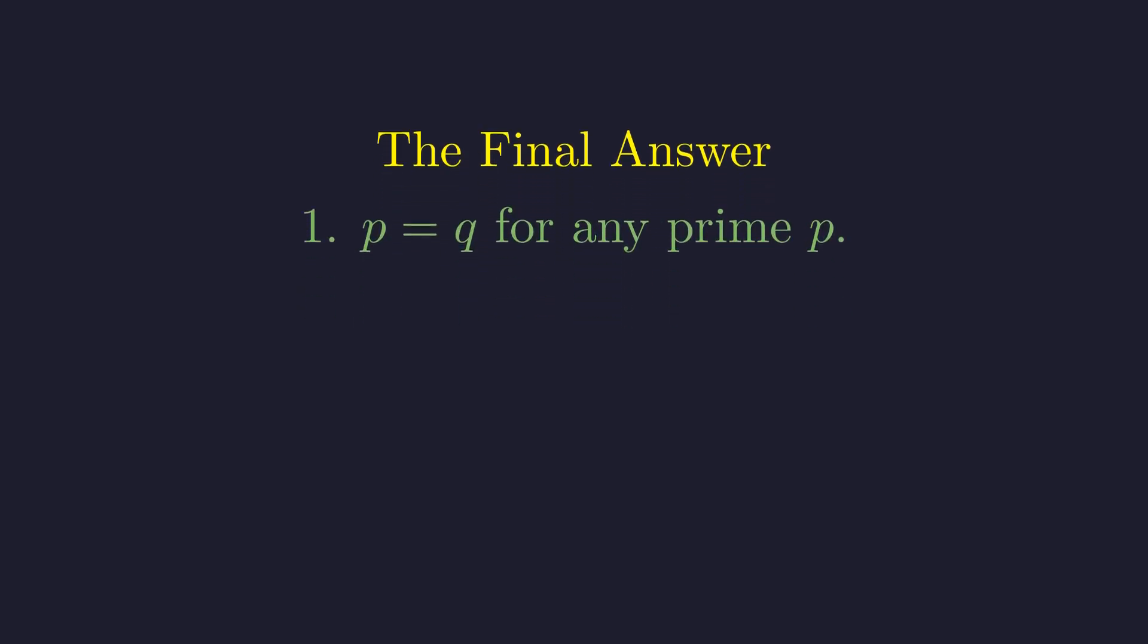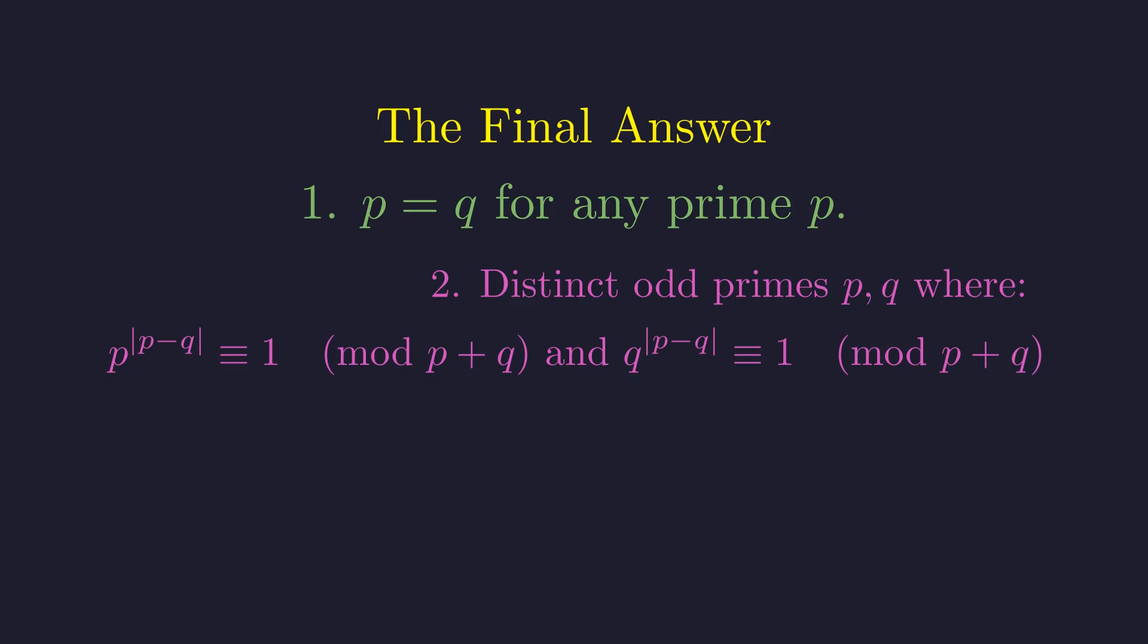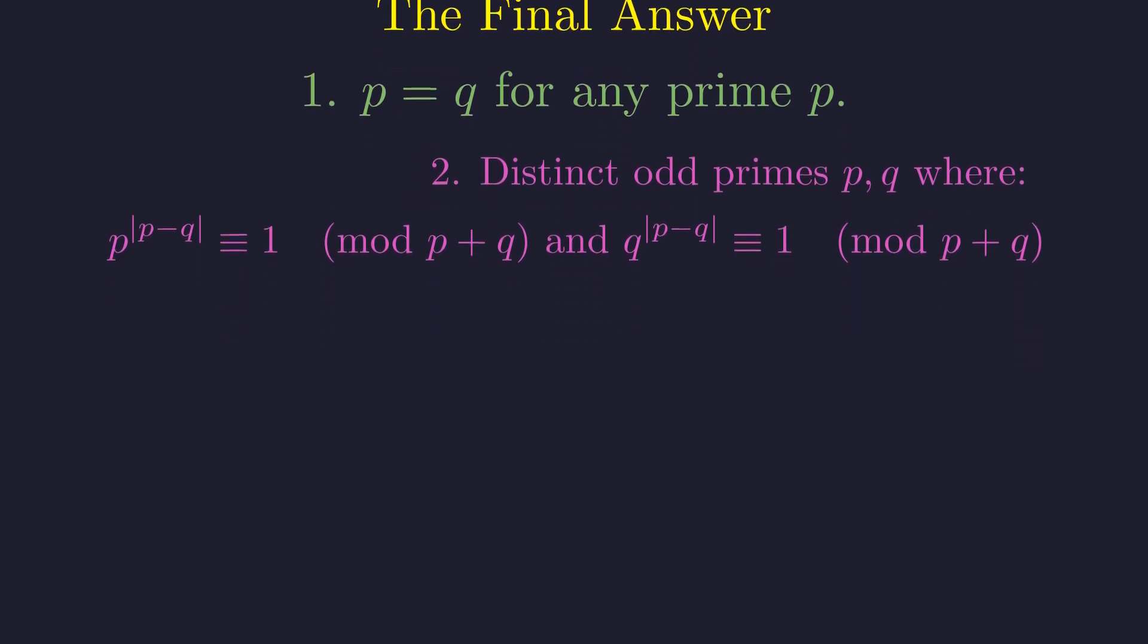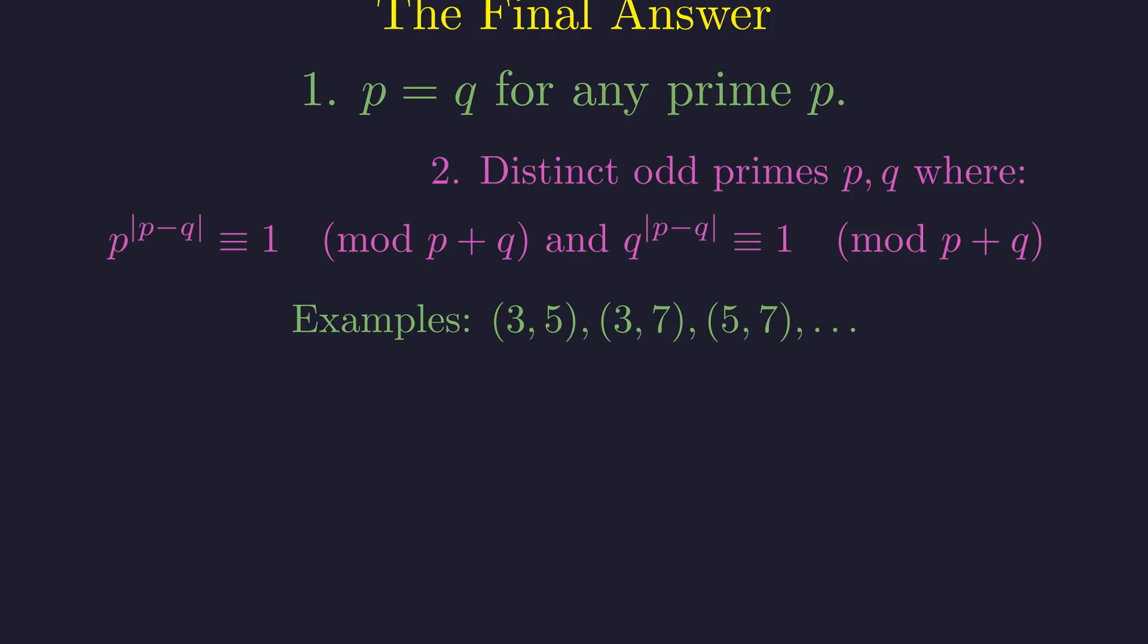After breaking down the problem into cases, what is the complete set of solutions? First, any pair of identical primes works. Second, any pair of distinct odd primes that satisfy these two specific congruence conditions. And importantly, we proved there are no solutions involving the prime 2, unless p and q are both 2. This second family includes our tested pair 3 and 5, and other pairs which can be found that satisfy these elegant conditions.